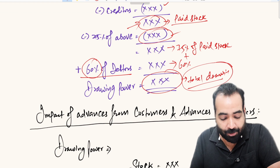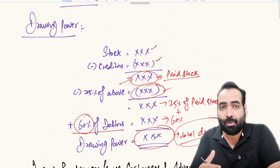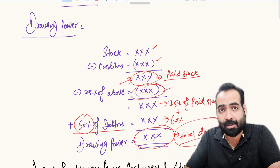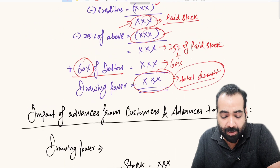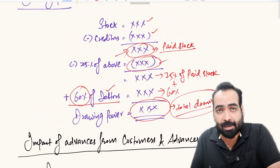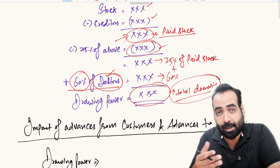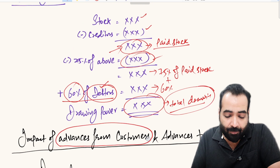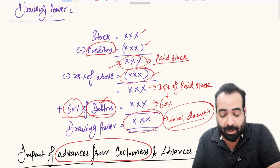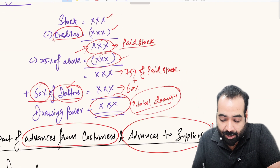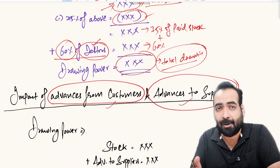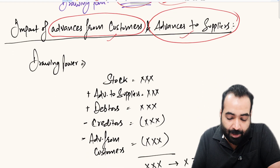When calculating drawing power, we want to give benefit to the customer on the amount invested in stock or receivables from customers. However, there may be cases where the customer has received advances from customers or has given advances to suppliers. If advances from customers and advances to suppliers both appear in the balance sheet, the calculation can further change.